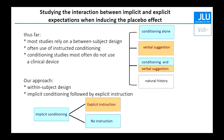In most studies thus far, a between-subject design was used — for example, one group received conditioning alone, one group verbal suggestion, and we had a combination or natural history. Often in these conditioning studies, instructive conditioning was used, meaning that participants were basically told what to expect. What we tried to do is use a within-subject design, and we tried to first implicitly condition the placebo response, then test whether an explicit instruction changes the placebo effect compared to a group that did not receive any additional instruction.